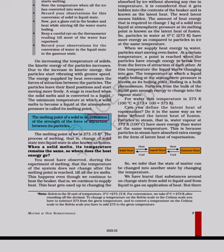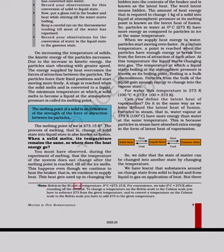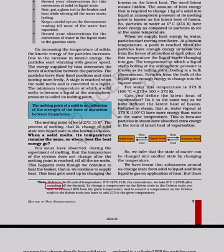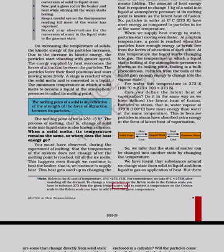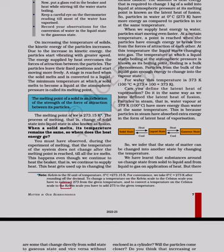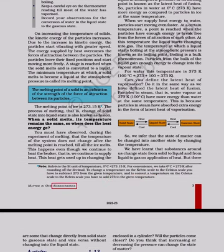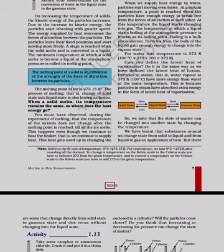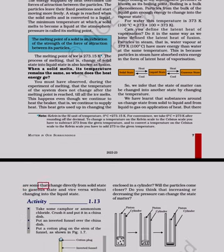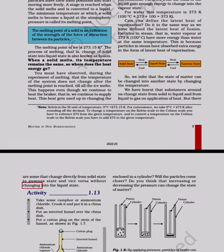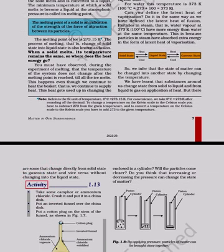The melting point of a solid is an indication of the strength of the force of attraction between its particles. Note: Kelvin is the SI unit of temperature. 0°C equals 273.15 K. For convenience we take 0°C equals 273 K after rounding off the decimal. To change a temperature on the Kelvin scale to the Celsius scale you have to subtract 273 from the given temperature. And to convert a temperature on the Celsius scale to the Kelvin scale you have to add 273 to the given temperature. Some substances change directly from solid state to gaseous state and vice versa without changing into the liquid state.